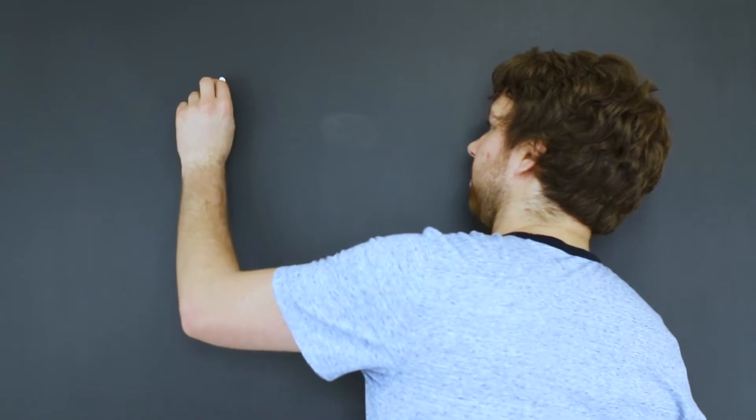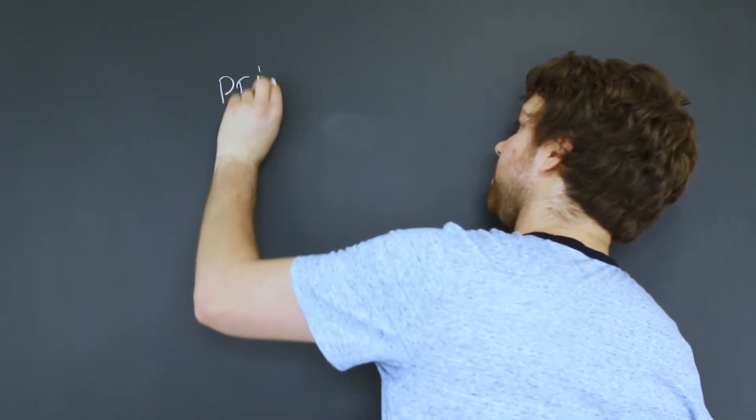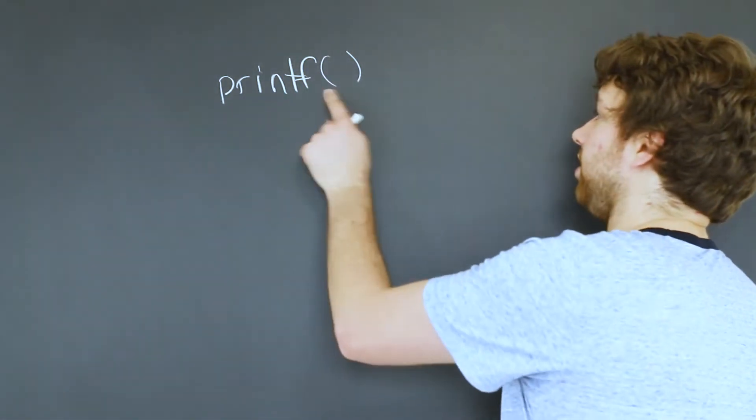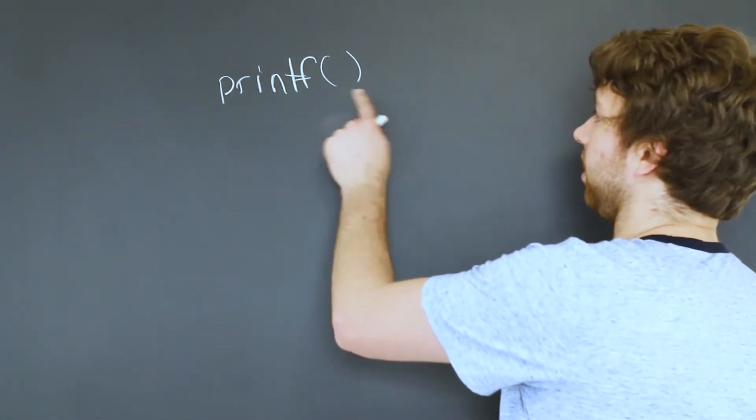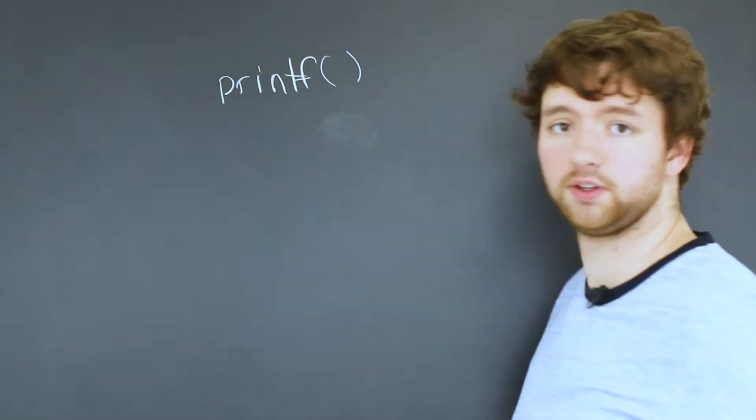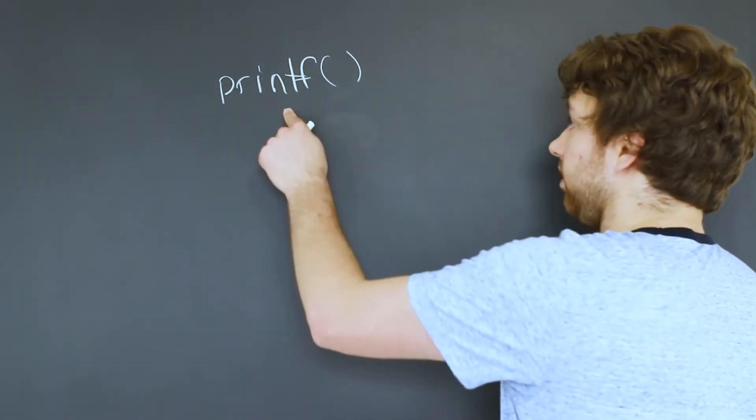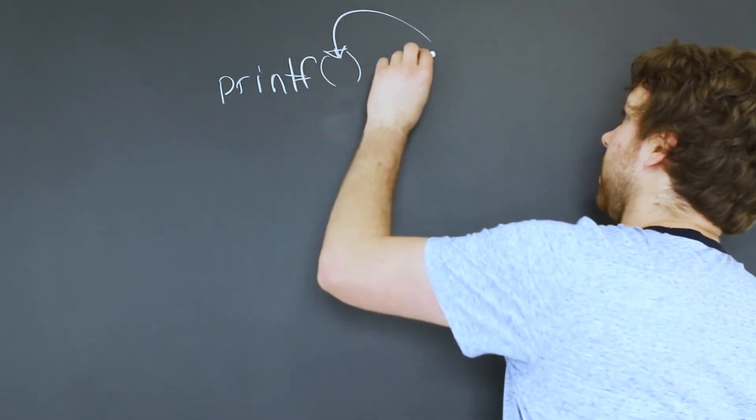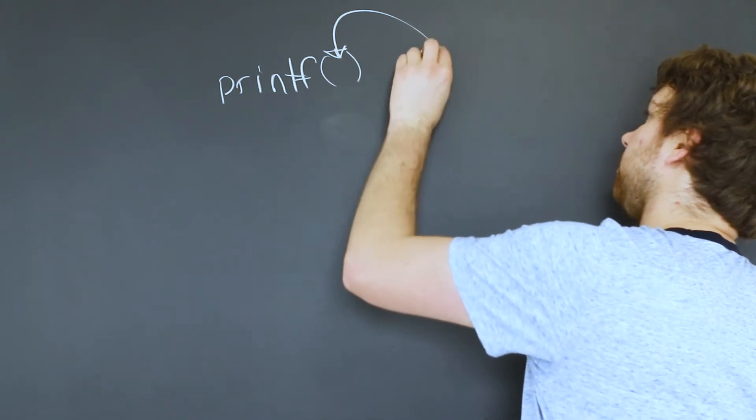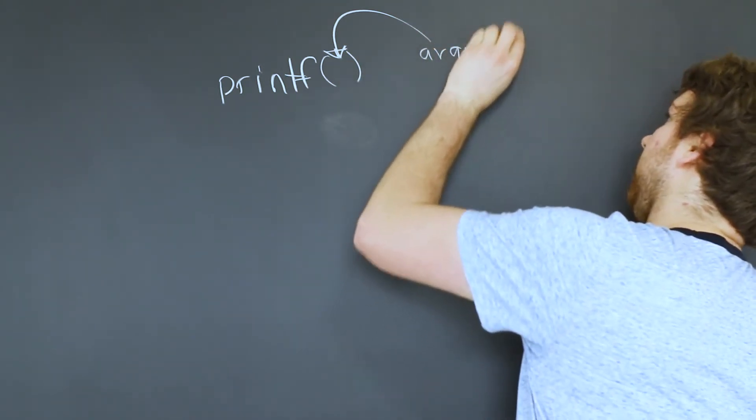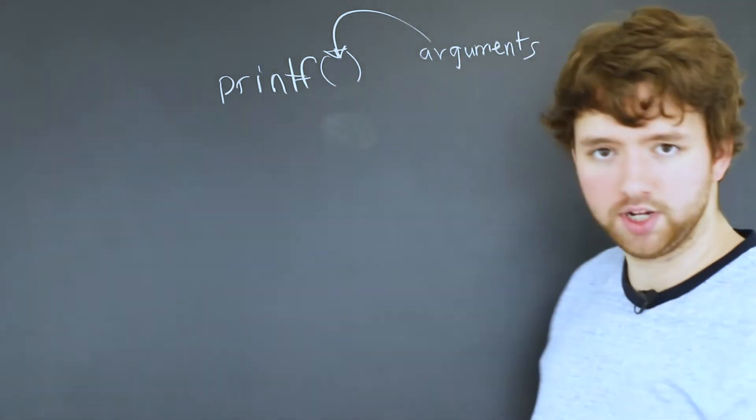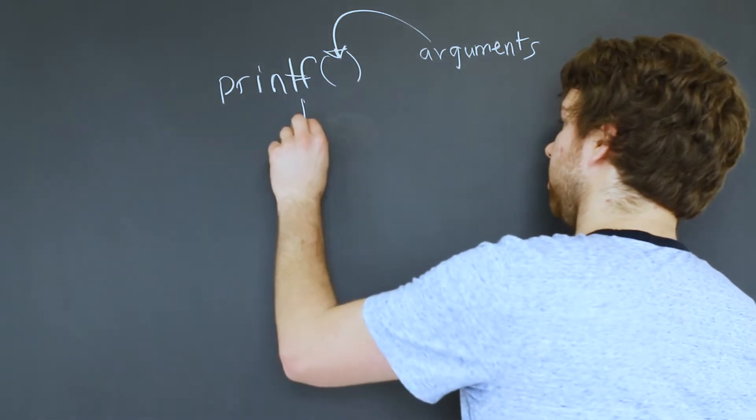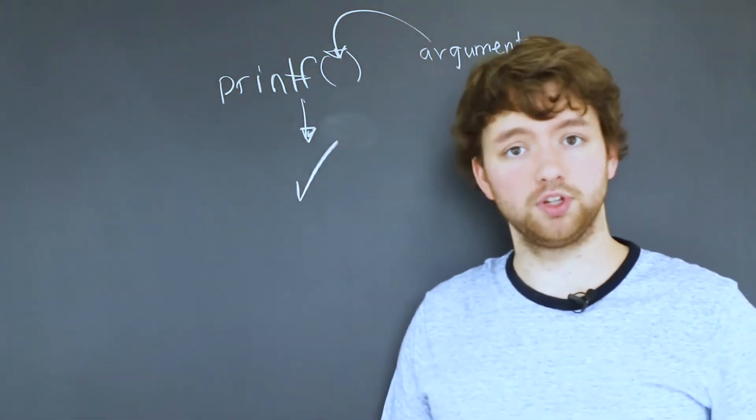For example, we have printf which is one of the simple functions we learned. Functions have these parentheses when you call them, and all you have to worry about is what you put in here, which is known as the arguments. You don't have to worry about how printf works or what it does, as long as the output from this function is what you want.